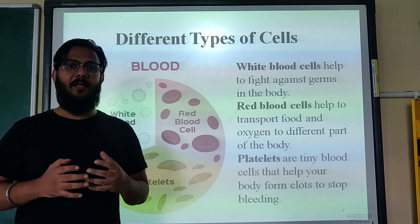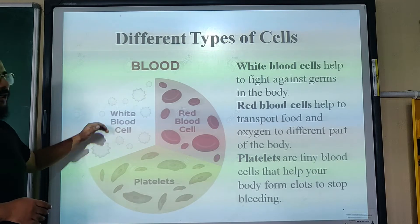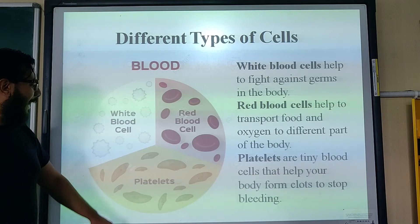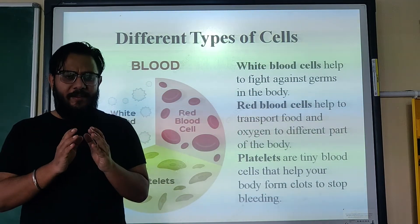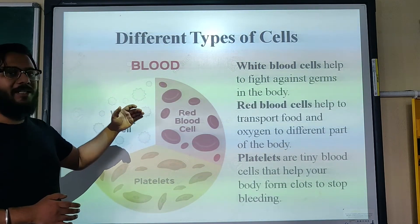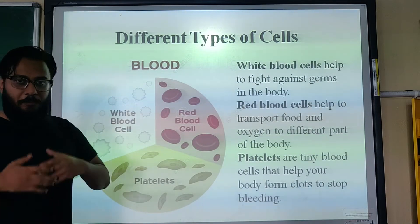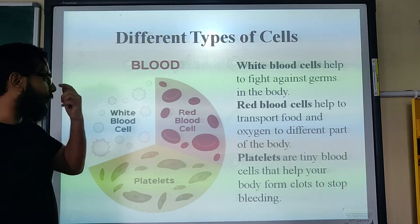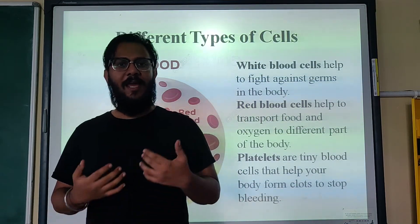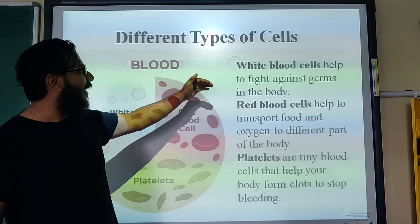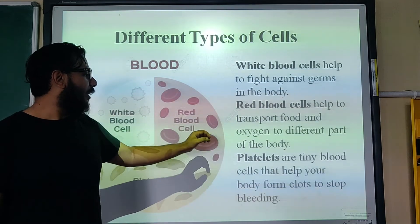Another type is blood cells. White blood cells help us fight diseases — they are the fighters of the body. Red blood cells provide the body with food and oxygen. Platelets help the body heal — if you have a cut, platelets help stop the bleeding. Internally, white blood cells fight bacteria and viruses that enter our body, while externally, our skin provides protection.